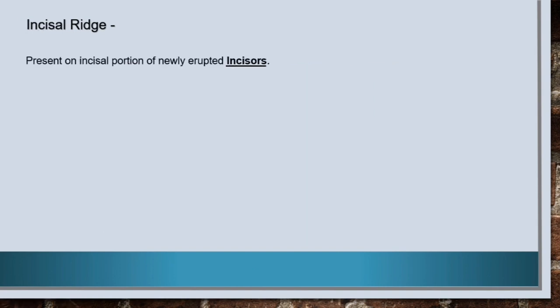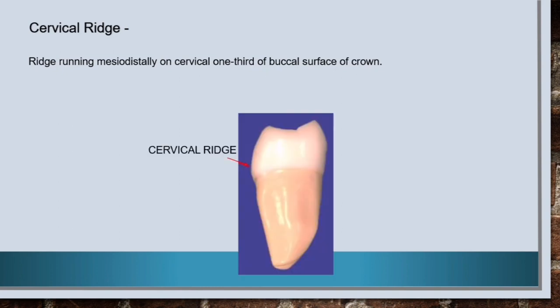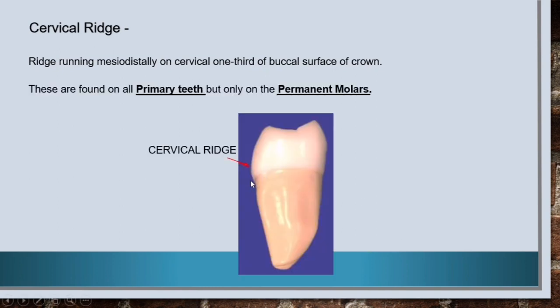Next is incisal ridge and, as the name suggests, this ridge is present on the incisal portion of newly erupted incisors. Next is cervical ridge and it runs mesiodistally on the cervical one-third of the buccal surface of the crown. These are found on all primary teeth but only on the permanent molars.